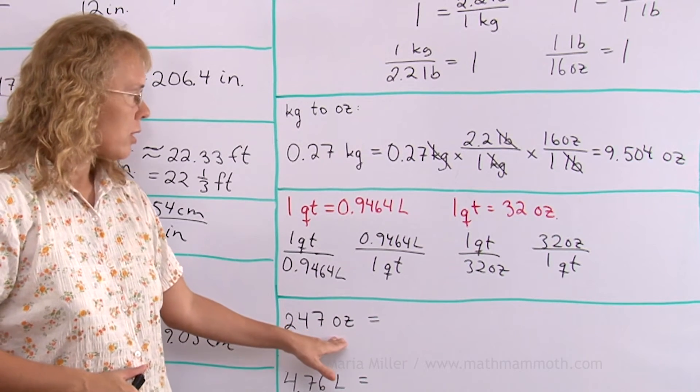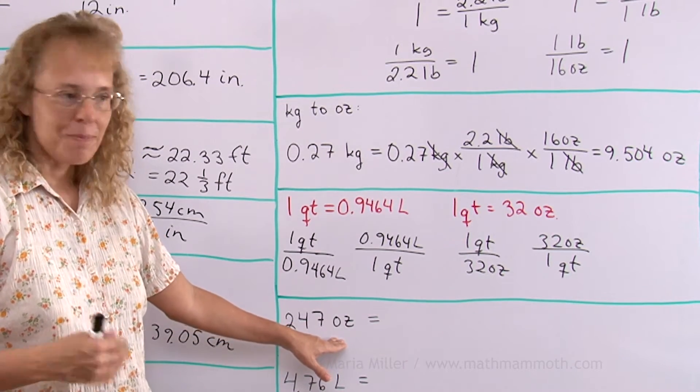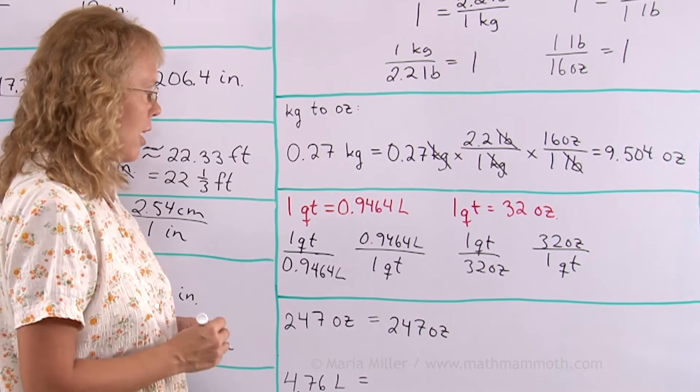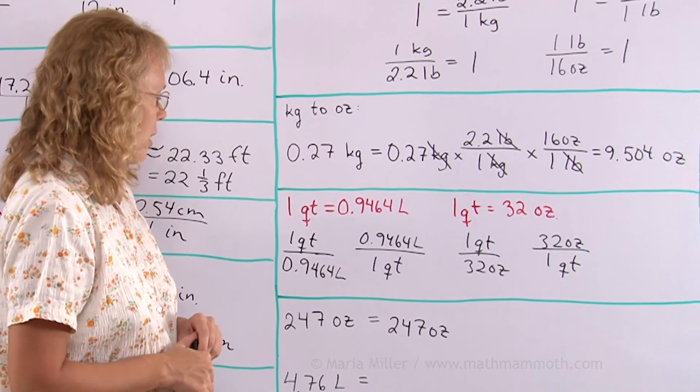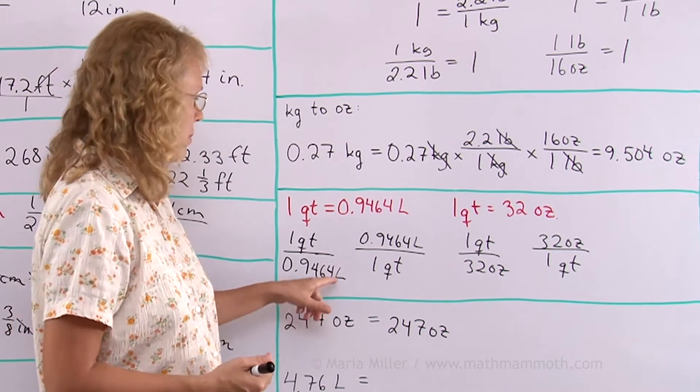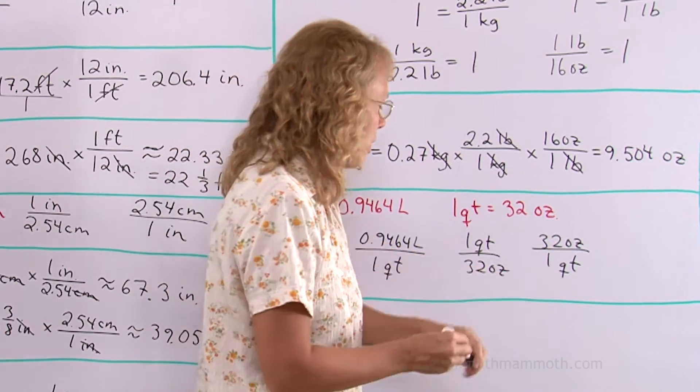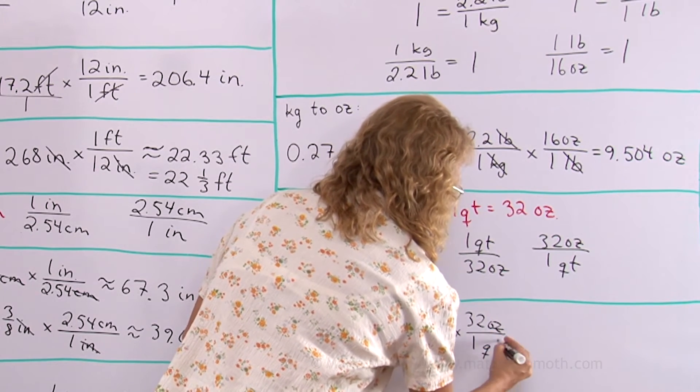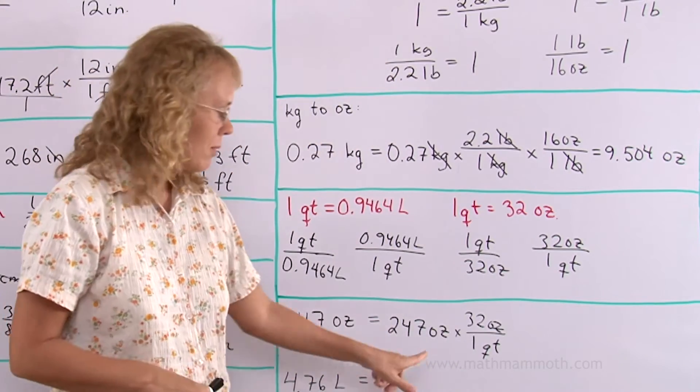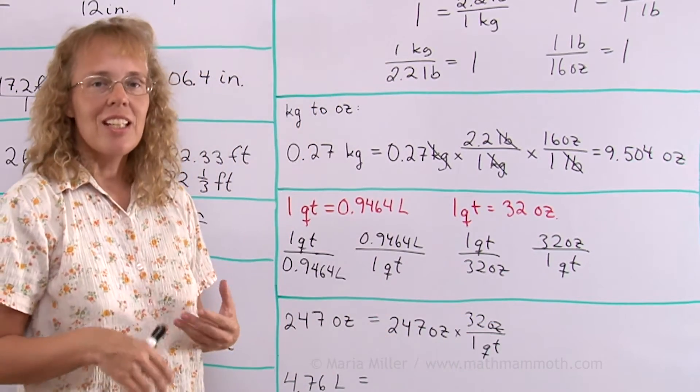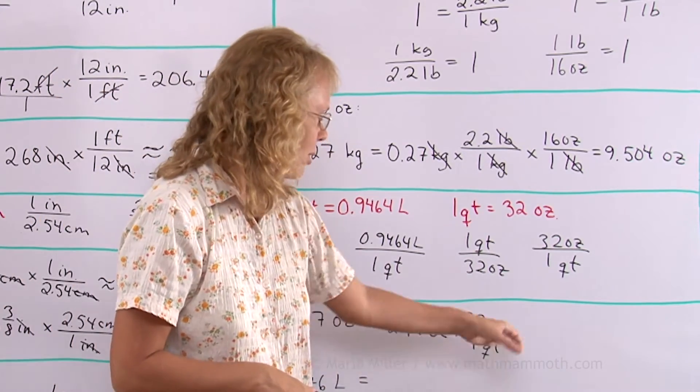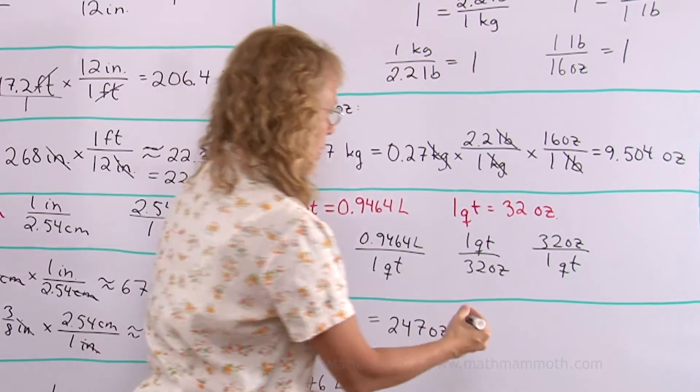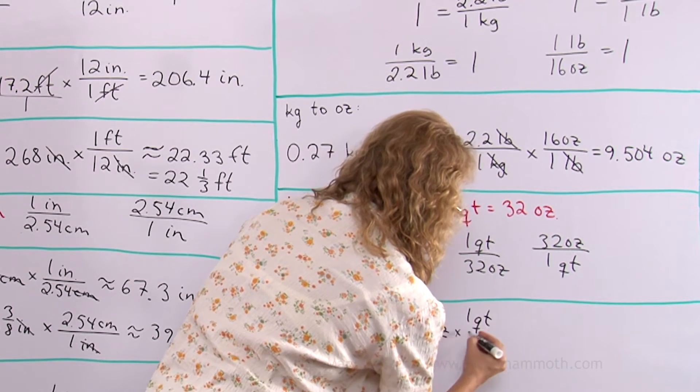I'm changing ounces to liters. Now let's see also what happens if I choose the wrong ratio. I want my ounces to be in the denominator. So I'll use this one. But let's say I used that one, the wrong one. 32 ounces over one quart. Now what happens is that these ounces, the ounces times ounces, they don't cancel out. It becomes ounces squared actually. Ounces times ounces. That's why it doesn't work. So I'm gonna erase it. And we will put one quart here over 32 ounces.